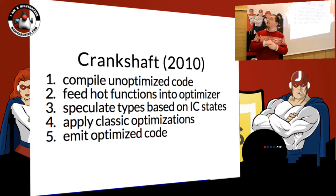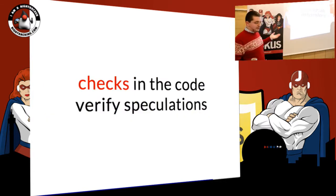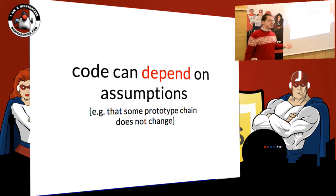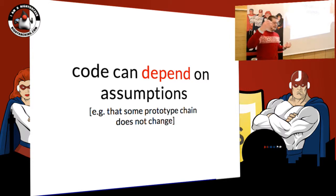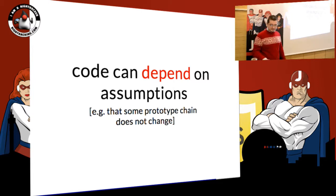That's the high-level overview — there is no real innovation here. It's well-known technology. The key thing is speculating based on the IC data collected. Of course, you need technology to check whether your speculations are correct, and then you de-optimize. You can also depend on things differently — not code that checks things, but somebody else checks that assumptions are not violated. So instead of checking on the use side, you check at the definition side of the value. For example, you can depend that some prototype never changes, and instead of checking every access, you check it at the place that can change the prototype.